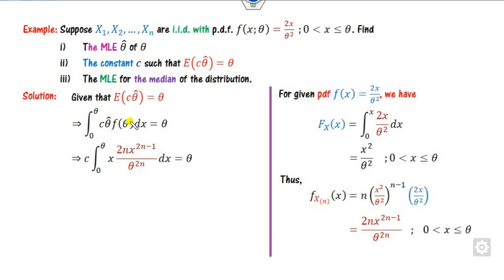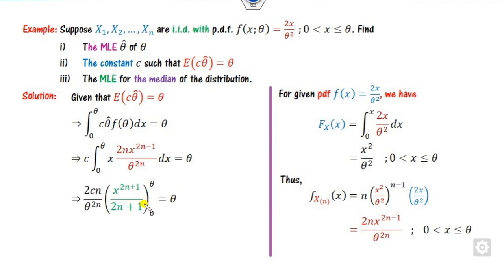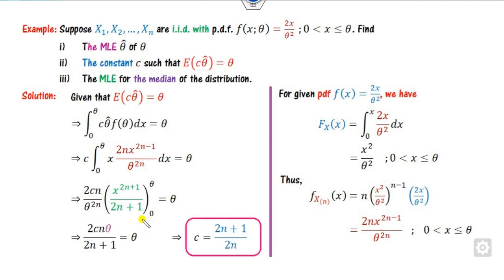Substituting the PDF into the expected value expression: theta is nothing but X(N), and the integrand involves x raised to power 2N. Integrating x^(2N) gives the result, and simplifying gives 2CN divided by (2^(N+1)) over (2^(2N)), with terms cancelling to leave one factor of theta. From this you can find the value of C — that is the right answer for the second part.